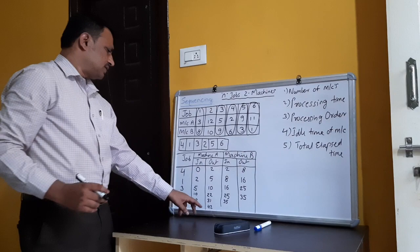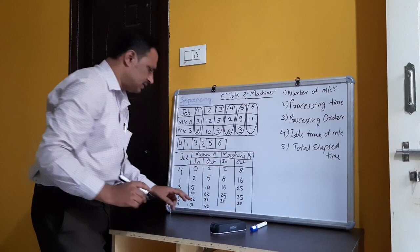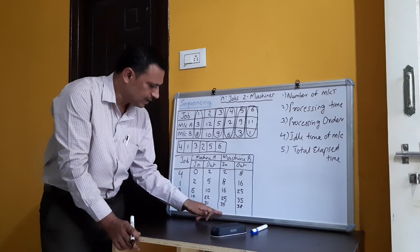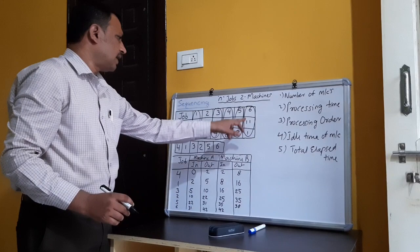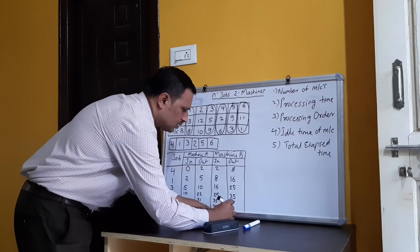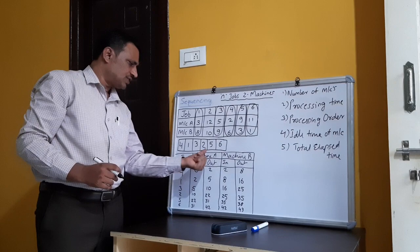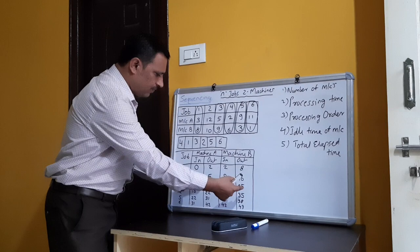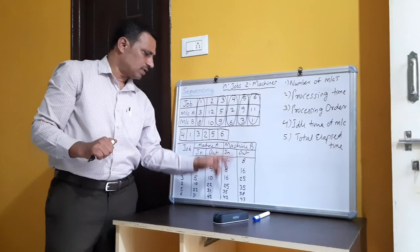For job five, out = 38, but the machine A out-time for job six is 42. Since 42 > 38, we must write 42 as the in-time for machine B for job six — we should not write 38 here. For job six: in = 42, processing time = 1, out = 43. We must be very careful while writing these in-times for machine B — always take the larger of the two values.